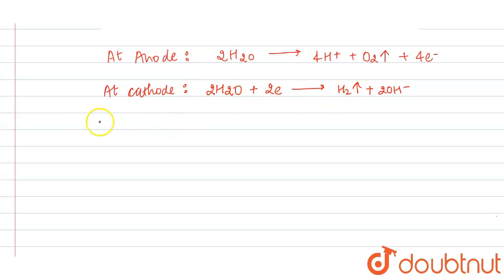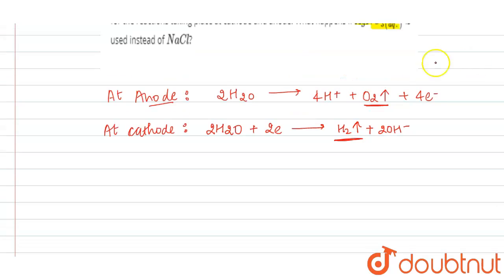So here we can say that during electrolysis of aqueous NaCl using inert electrode, at anode, O2 gas liberated, and at cathode, H2 gas is liberated. This is the case of NaCl.